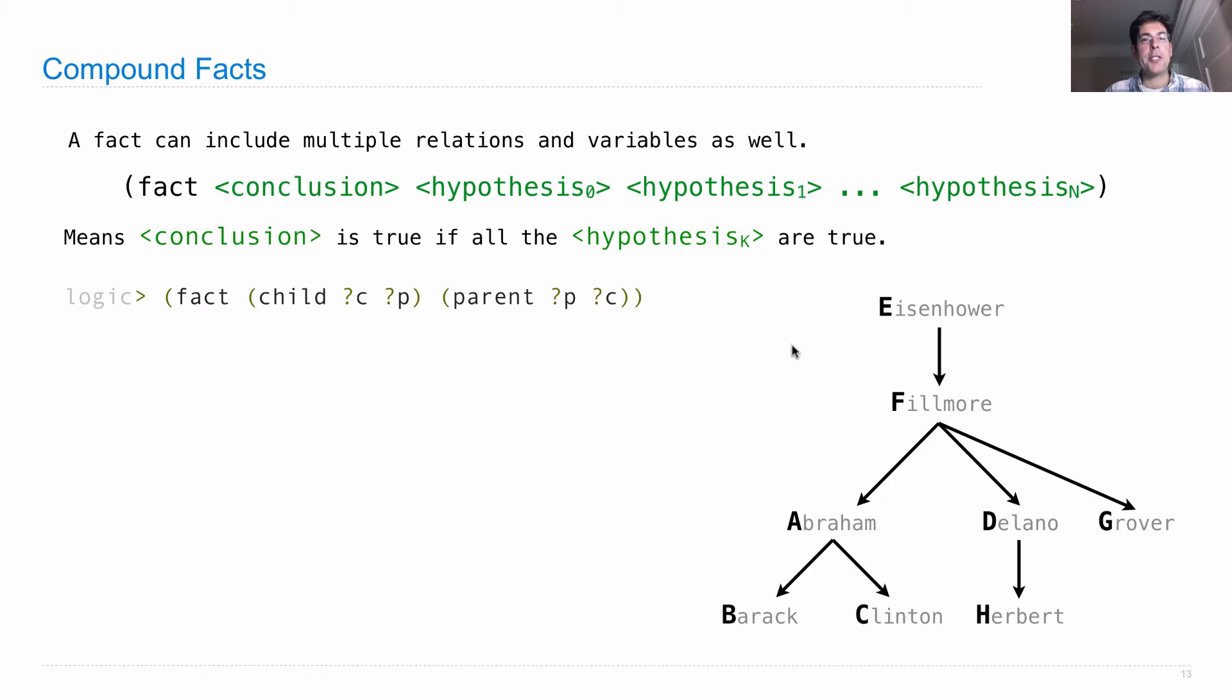As an example, I could state as a fact that there is a child relation between any C and any P, just as long as there's a parent relationship between the P and the C. When I satisfy this fact, I have to do it with one binding to C and one binding to P. These two P's refer to the same thing. These two C's refer to the same thing. And we know who's a parent of whom already, based on the parent facts that we stated before, which are encoded in this tree structure. The child relation is just saying there's a relation that goes exactly the other way around.